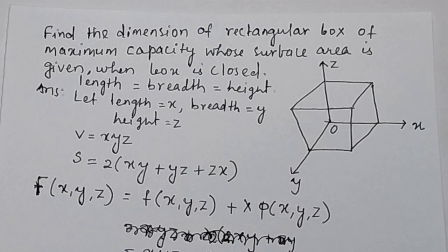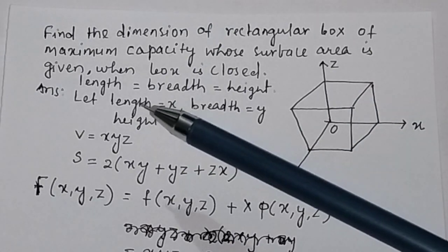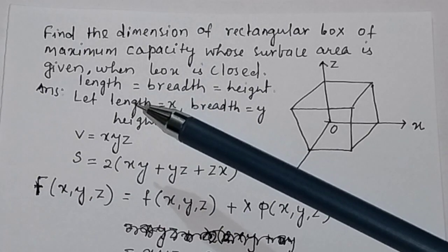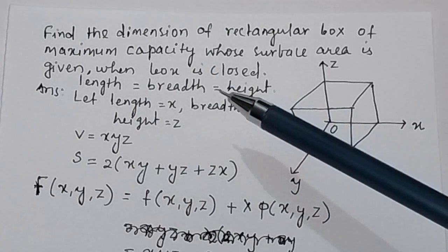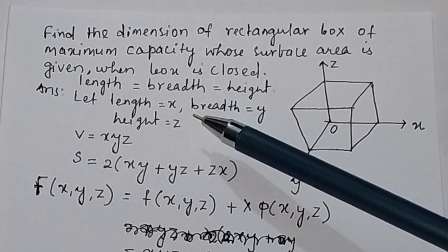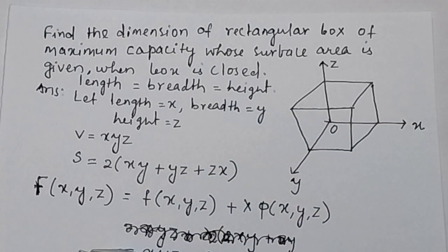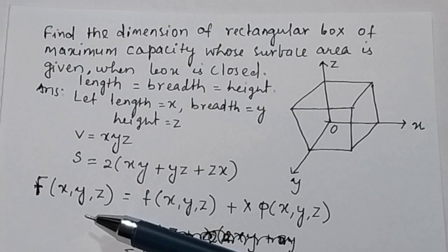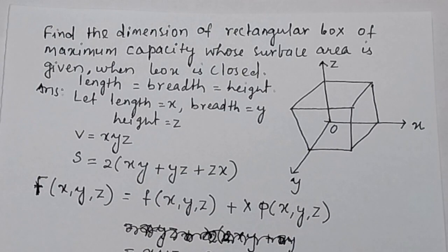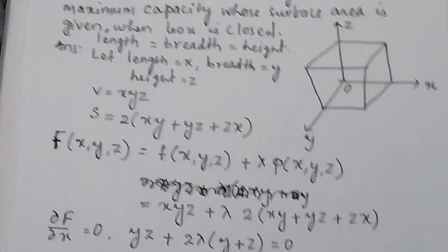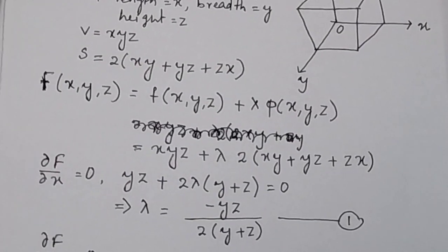We have to prove this by constraint optimization using the Lagrange multiplier. Using this method, we can solve that length x is equal to breadth y is equal to height z, that is x = y = z.